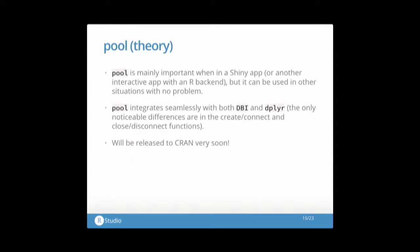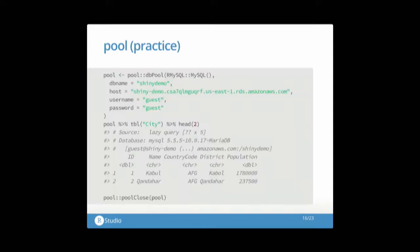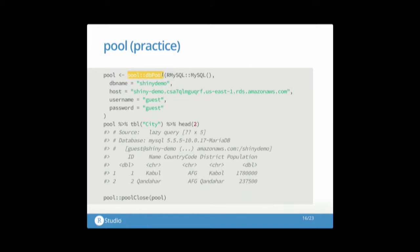Pool is mainly important for Shiny apps because of this interactive context, but it can be used in any other context without any problem. It integrates seamlessly with both DBI and Dplyr, and it will be on CRAN really soon. To give you an idea of what it looks like: we still have our connection, disconnection, and query — the query is exactly the same as with Dplyr or DBI. The only things that change are that instead of calling dbConnect I call dbPool, and instead of dbDisconnect I call poolClose. This takes care of making all the connections and disconnections you might need.